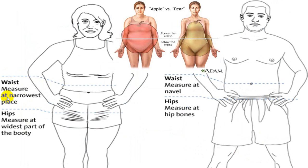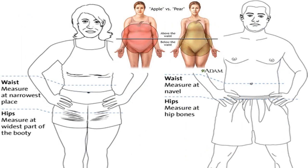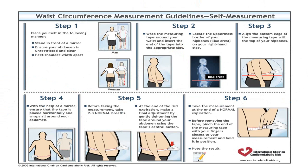Waist measurement should be done at the narrowest place — at the level of the umbilicus — and hip measurement at the widest place, at the hip bones. By calculating these, you can identify two different types: apple-type obesity (android) and pear-type obesity (gynoid). These are the two common terms used.